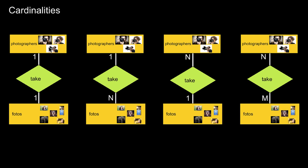Looking at the one-to-one relationship: reading across, a photographer can take at most one photo. Well, that's a poor business model for a photo agency obviously, but maybe you want to model it like that. And reading the other direction: a photo is taken by at most one photographer.